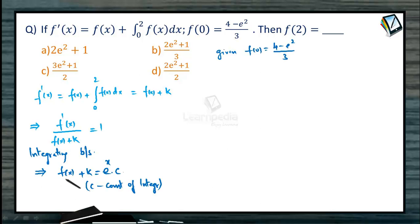e squared by 3. What happens when we put x equal to 0? 4 minus e squared by 3 plus k equals e to the power 0, that is 1, times c. So we will treat this as equation 1. We will try to find the value of c.